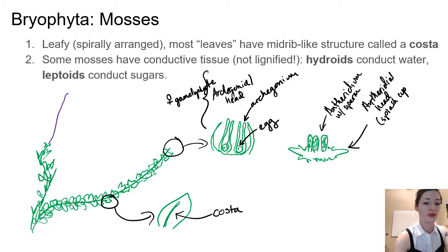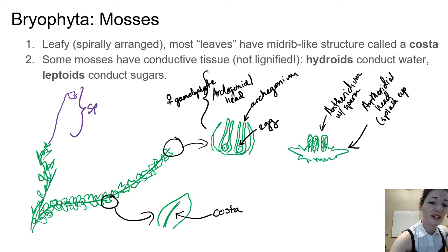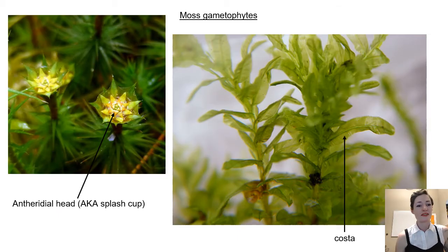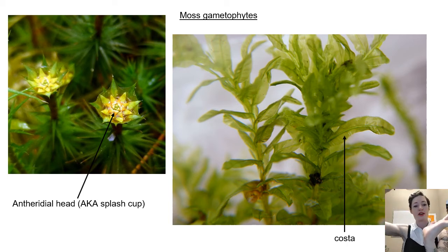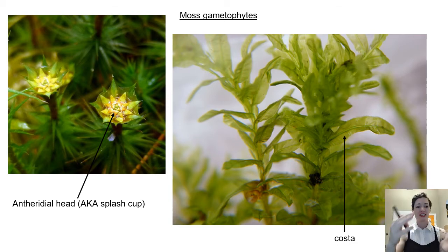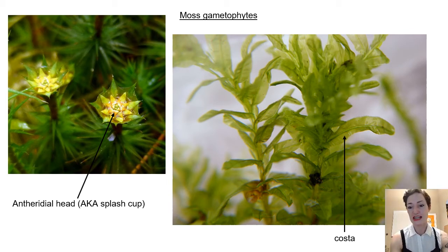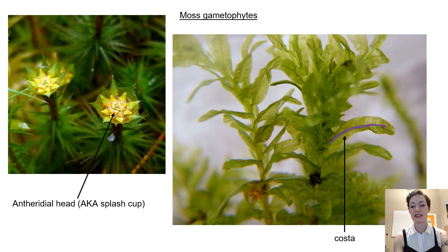When fertilization occurs, we have our leafy gametophyte — this would have been a female gametophyte with an archegonial head — and the sporophyte grows out of the female gametophyte. We'll look at all the components of the sporophyte on the next few slides. On the left you can see a picture of a few antheridial heads — those are male gametophytes with that cup-like structure so that water when it's raining can splash onto the splash cup and knock sperm out. On the right you can see the costa in the middle of the leaf, like a midrib, which helps us identify this as a moss and not a leafy liverwort. We can also see that the leaves are spirally arranged, coming out on all sides of that stem-like structure.